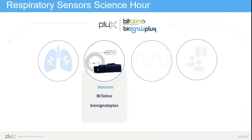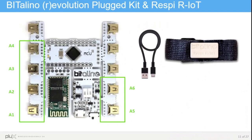Now we will explain some more details about the sensor. Starting with the BITalino product line, the sensor can be used either in the BITalino Evolution Plugged Kit or in the Raspi RIOT Wearable Device. In the BITalino Plugged Kit, the sensor can be connected to any of its analog ports, but four of the ports are limited to a resolution of 10 bits, while the other two are limited to 6 bits. In the case of the Raspi RIOT, the sensor is connected to its analog port, which is limited to 12 bits resolution.